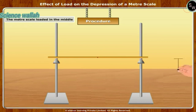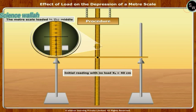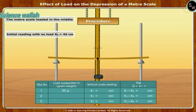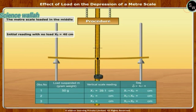Attach the pointer at the center of gravity of the scale with the help of wax. Note the initial reading on the vertical scale corresponding to the tip of the pointer when no weights are suspended. Suspend a hanger at the center of the meter scale and note the corresponding reading on the vertical scale.